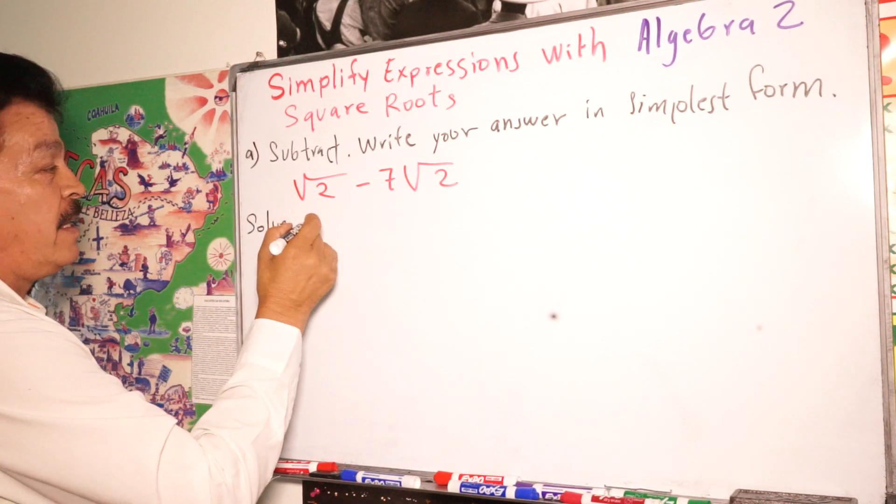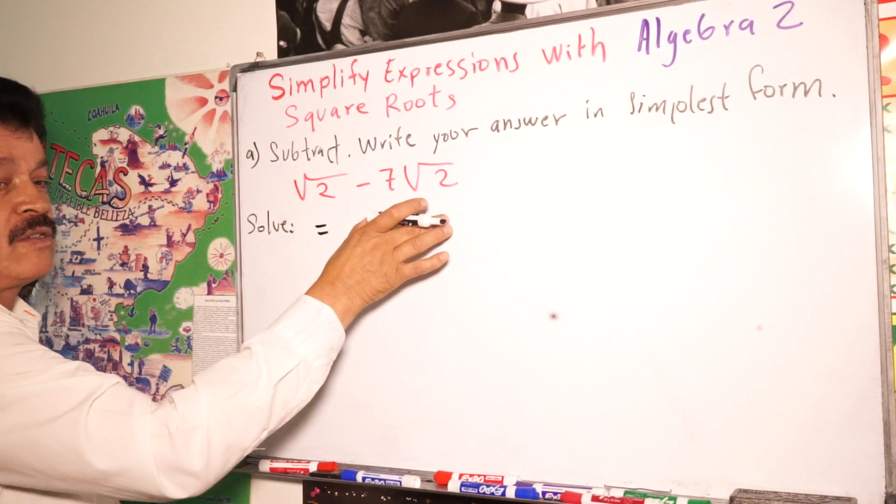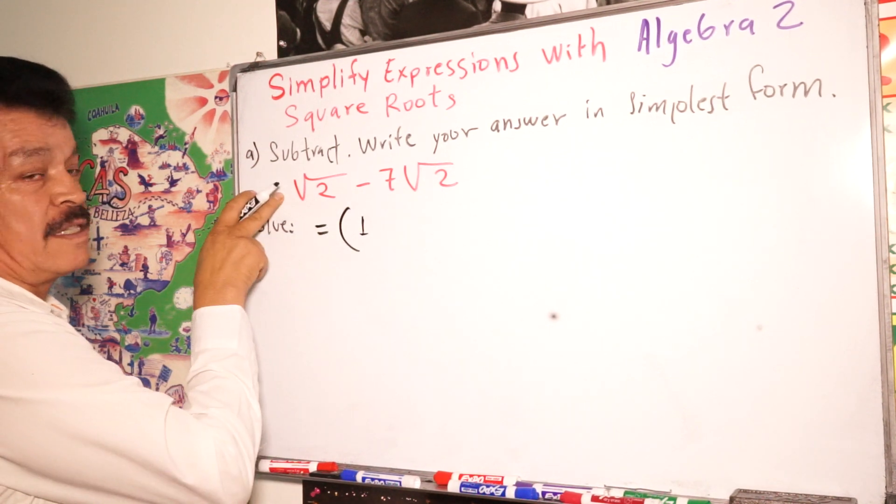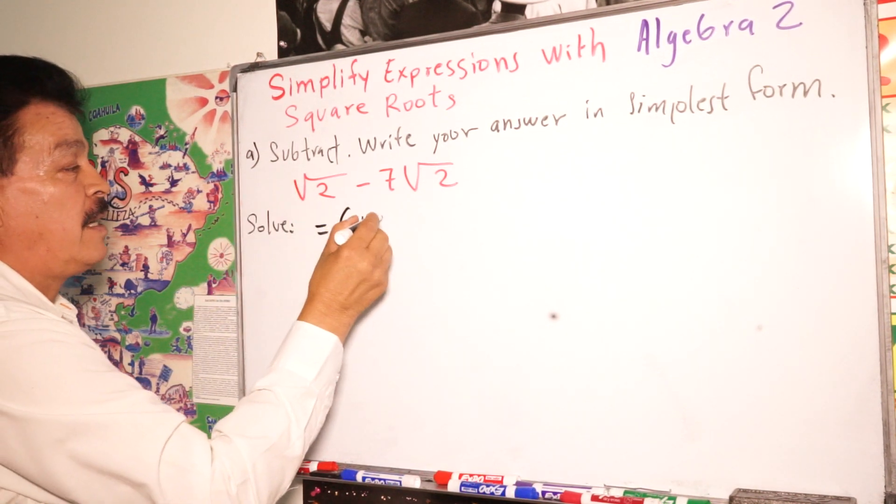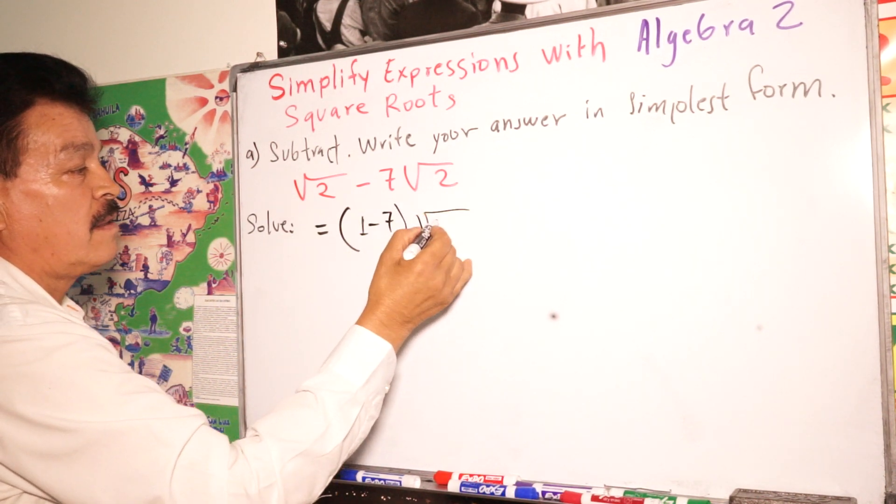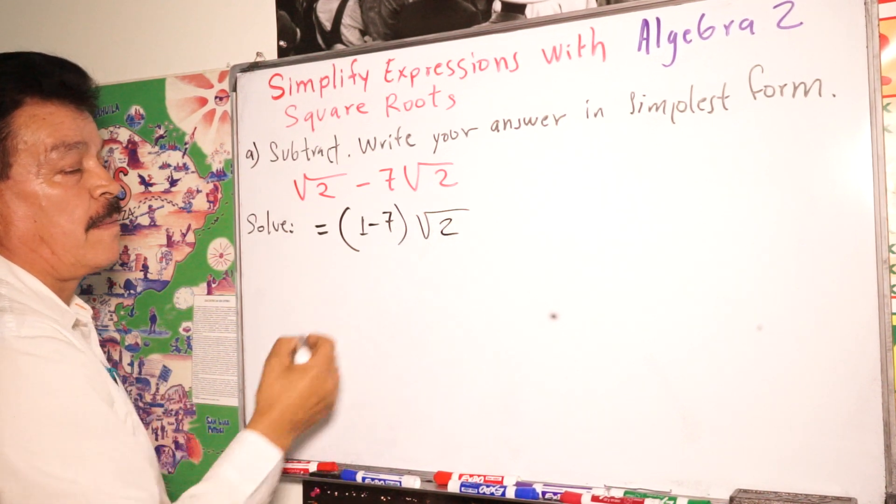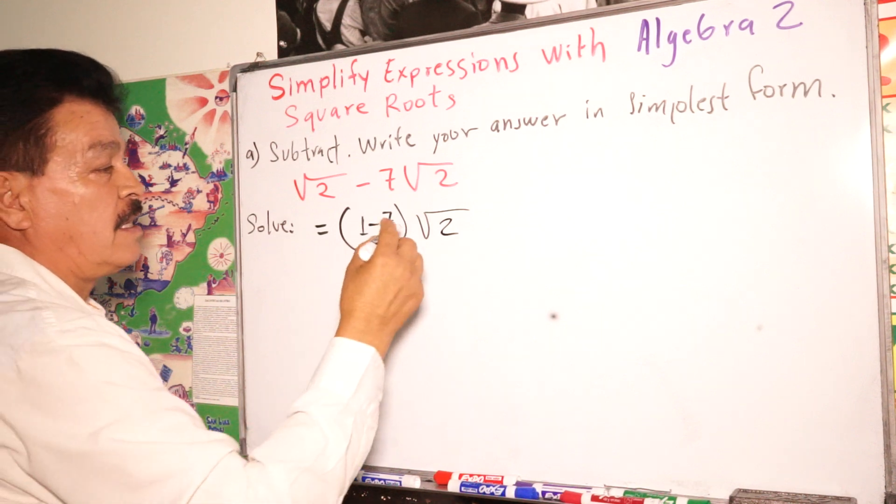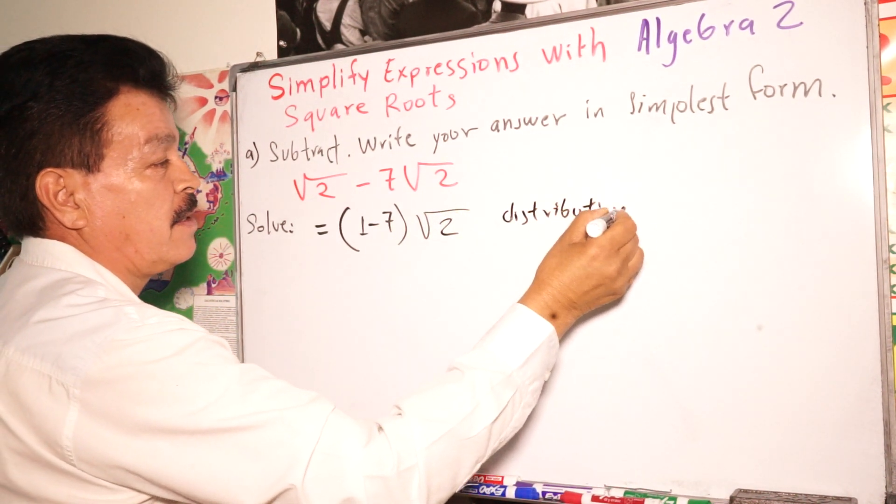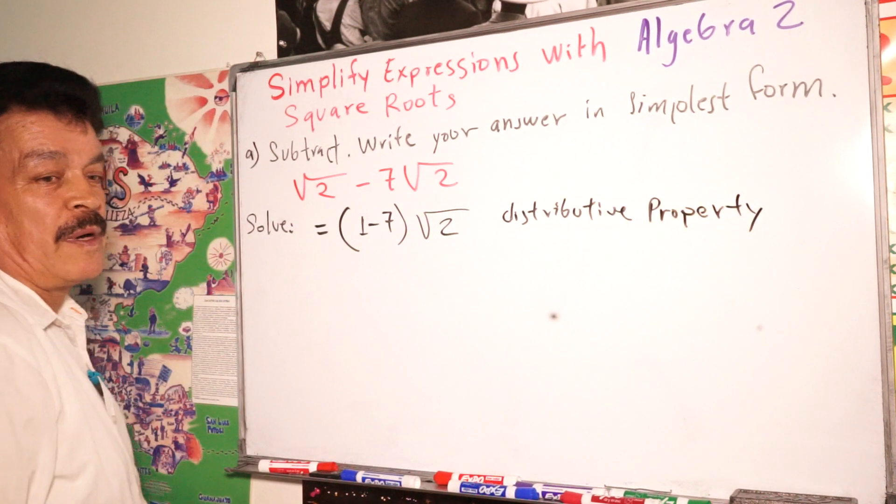In this case, this will be equals here. There's a coefficient one here, minus 7, times square root 2. This is the distributive property.